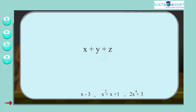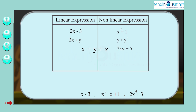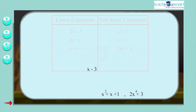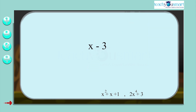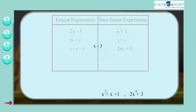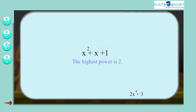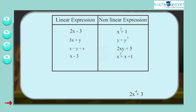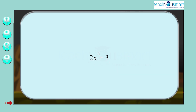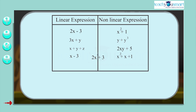In x plus y plus z, there are three variables x, y, and z and the highest power is 1, so it is a linear expression. In x minus 3, the power is 1, therefore it is a linear expression. In x squared plus x plus 1, the highest power is 2, so it is not a linear expression. In 2x raised to the power 4 plus 3, the power is 4, so it is not a linear expression.